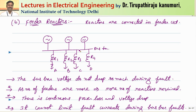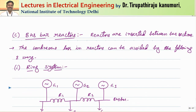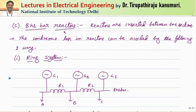However, feeder reactors still have the disadvantage of continuous power loss and voltage drop, since each reactor continuously carries rated current. Another disadvantage is that if the fault happens on the bus bar itself, the feeder reactors cannot protect the generators during a bus bar fault. Although bus bar faults are less frequent, feeder reactors do not provide protection in that scenario. That is why this method is not used in practice, and instead we go for bus bar reactors.